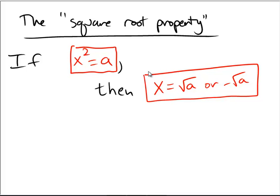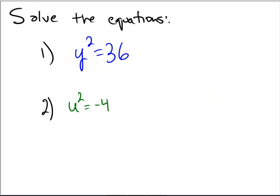So take the square root and it could be either a positive or a negative. So in the first case, with y squared equals 36, the square root property would say y could be equal to the square root of 36 or the negative of the square root of 36.